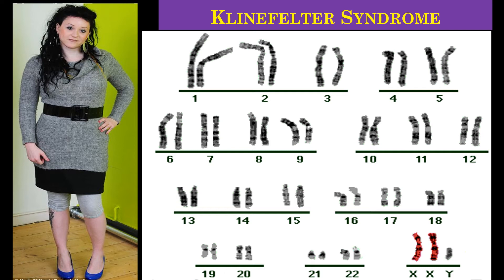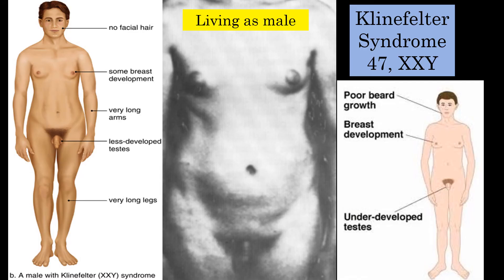Here is the karyotype for a person with Klinefelter syndrome. This person has an extra chromosome, but the extra chromosome is a sex chromosome. So this person has two X chromosomes — the recipe for female — but also a Y chromosome, the recipe for male. This person has some male and some female characteristics; this is an intersex condition. A medical record would indicate Klinefelter syndrome as '47, XXY' — 47 chromosomes instead of 46, with the extra sex chromosome. People with Klinefelter's might live as male or as female.